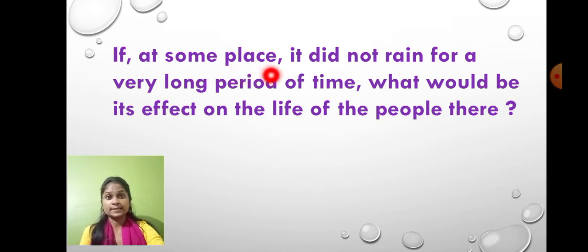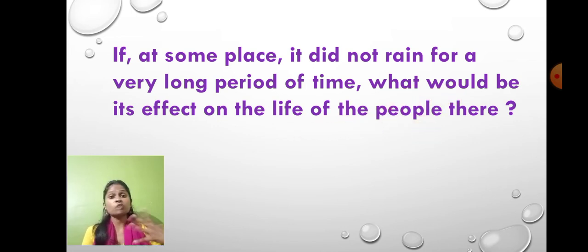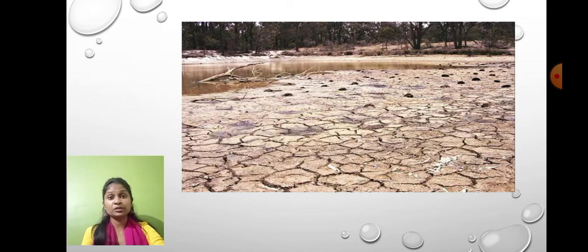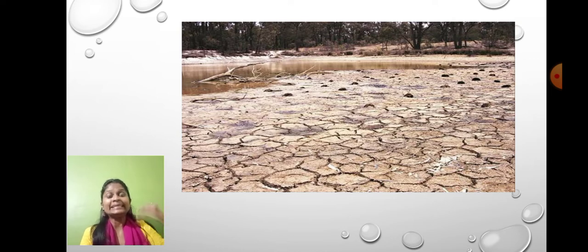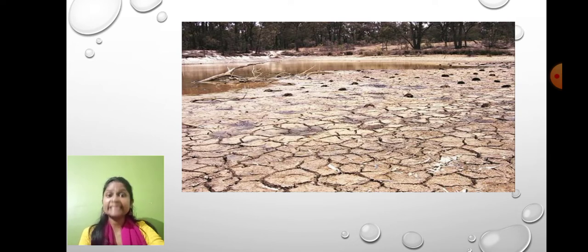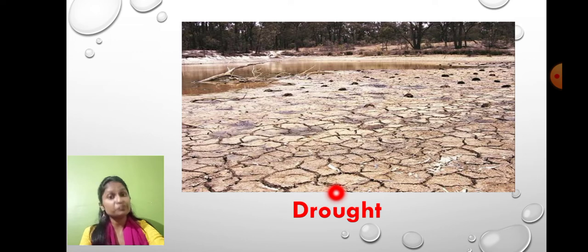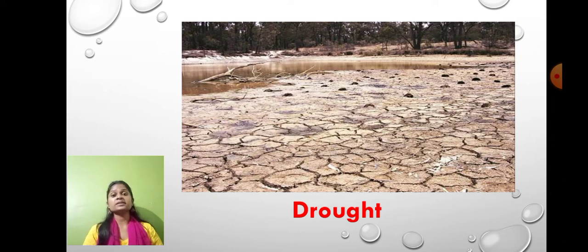If it does not rain for a very long period of time in a particular region, what would be the effect on the life of the people there? The land would show cracking and there would be a deficiency of water. Because of rain, the water level in the ground increases — without it, less and less water is available. This condition is called drought. A deficiency of rain causes drought, which is a condition where there is a negligible amount of water.